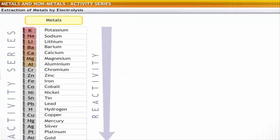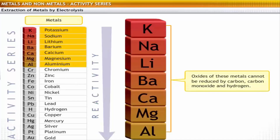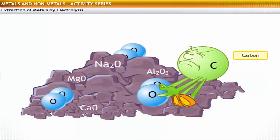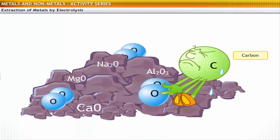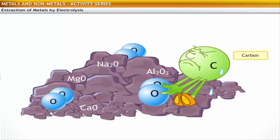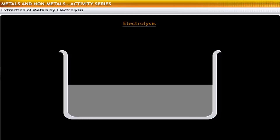The metals high up in the activity series are very reactive. Hence, they cannot be obtained from their compounds by heating with common reducing agents like carbon, carbon monoxide and hydrogen. For example, a reducing agent like carbon cannot reduce the oxides of metals like sodium, magnesium, calcium and aluminum because they have more affinity for oxygen than carbon. Therefore, these metals are refined by another method known as electrolysis.